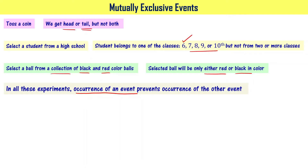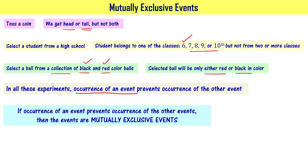In all these experiments, occurrence of one event prevents the occurrence of another event. Getting head prevents getting tail. When you pick a black color ball, it prevents the occurrence of picking a red color ball. When you have such a scenario — if occurrence of an event prevents occurrence of other events — then the events are called mutually exclusive events. Two elementary events of an experiment are mutually exclusive events.